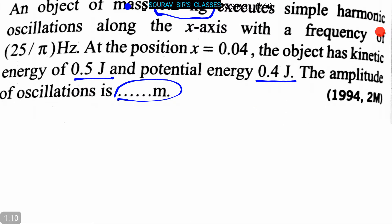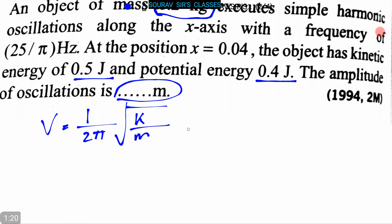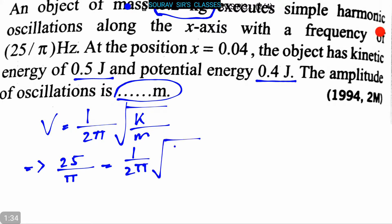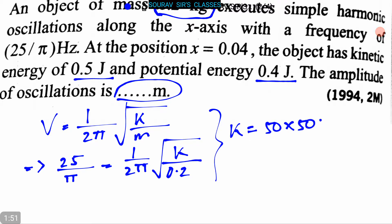Now let's proceed to the solution. Since ν = (1/2π)√(k/m), we can write that 25/π = (1/2π)√(k/0.2), where m = 0.2 kg is given. From here we can solve to get k = 50 × 50 × 0.2, which equals 500 newton per meter.